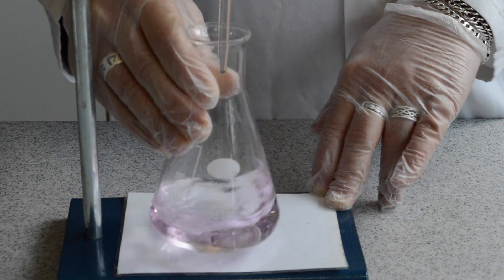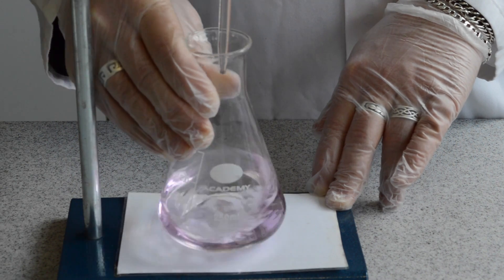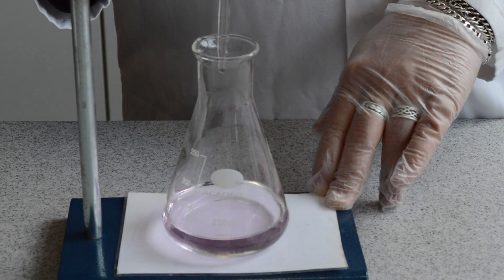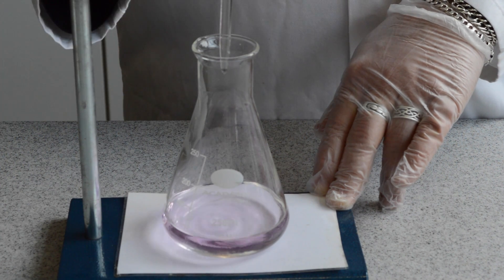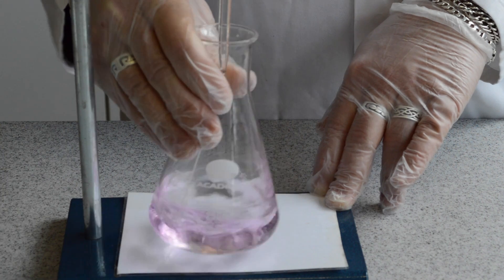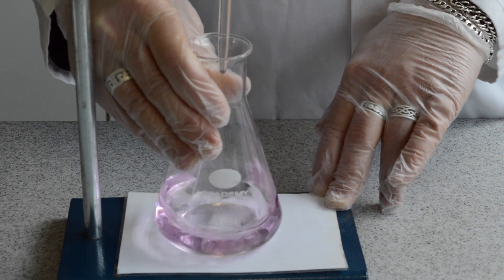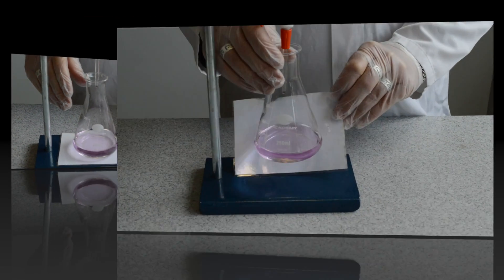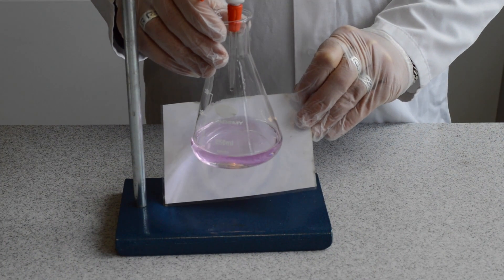The end point of the titration is reached when the colour change of the phenolphthalein indicator is permanent after swirling the contents of the flask. You will see this colour change easily against the white card or white tile on your burette stand base.